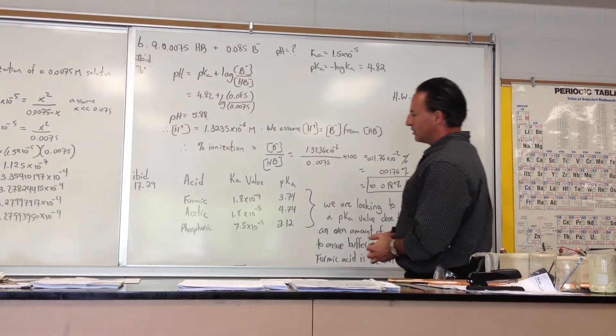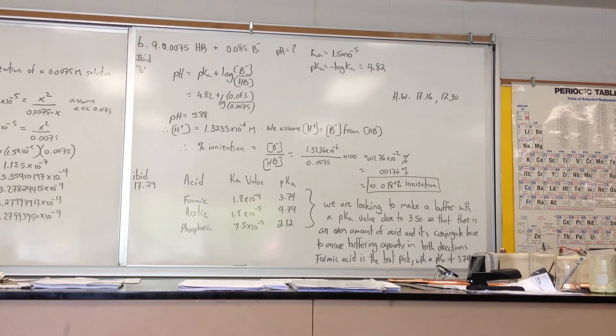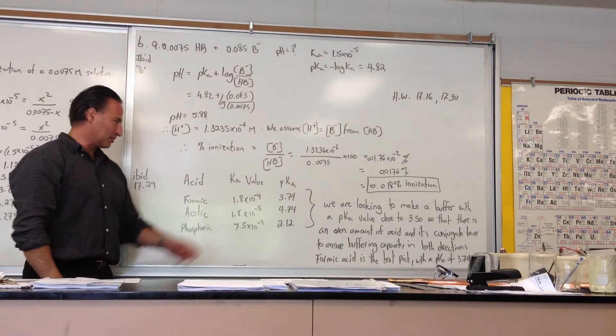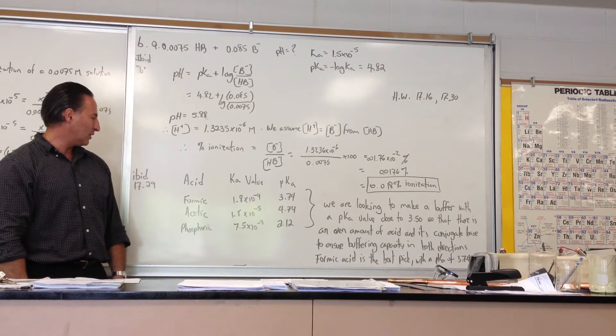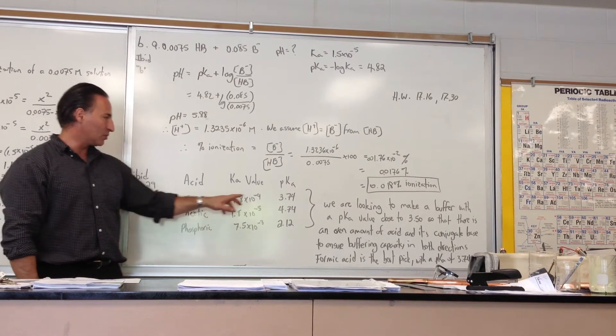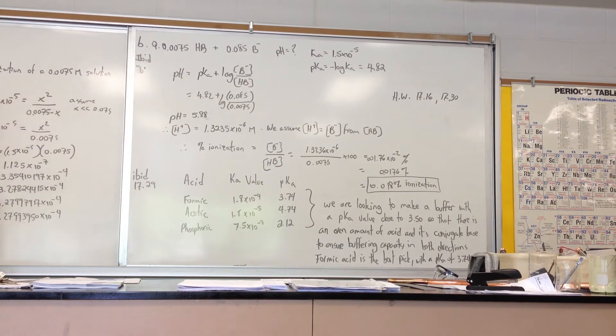The next question poses a little bit of a problem. We're asked to make a buffer that is starting at a pH of 3.5, and we're given a choice of three weak acids: formic acid, acetic acid, and phosphoric acid. We know the Ka values because they're listed at the back of the book. So what I did is I calculated the pKa values for all three of those acids, and I found out that formic acid had a pKa value which was the closest to 3.5. Why do we want a pKa value that's close to 3.5? Because whenever the pH equals the pKa, the acid is half ionized.